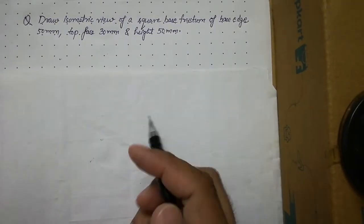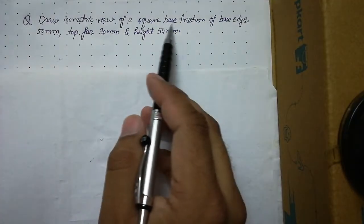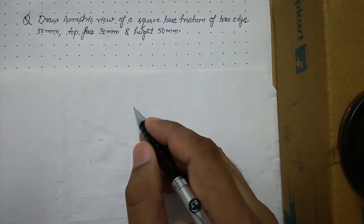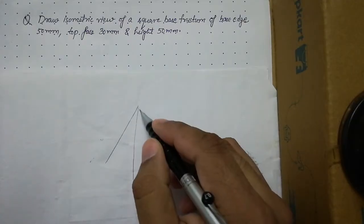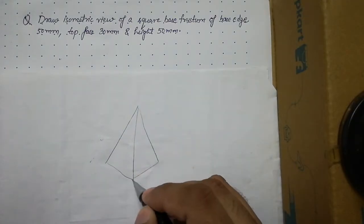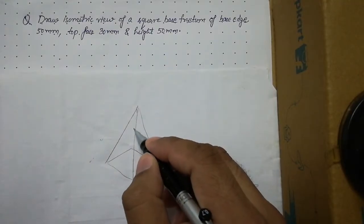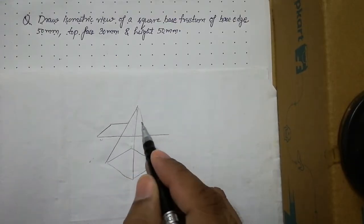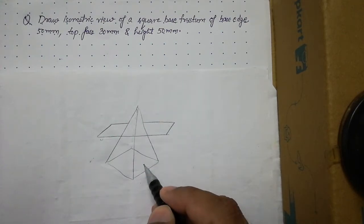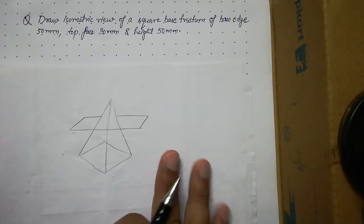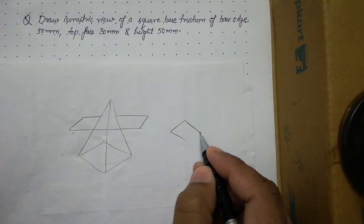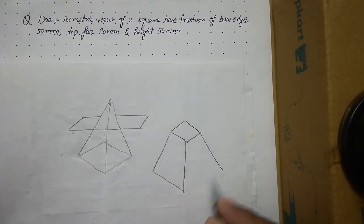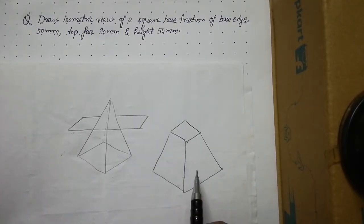Hello students, today we will talk about the isometric view of a square base frustum. Let us first understand what a square base frustum is. Suppose we have a square pyramid — a pyramid whose base is a square. If we cut this pyramid using a cutting plane parallel to its base and remove the top portion, the remaining solid is called a square base frustum.